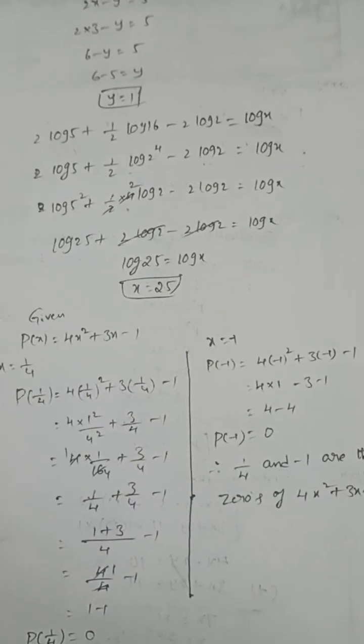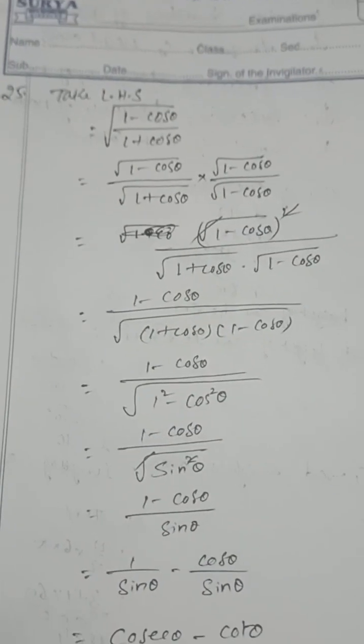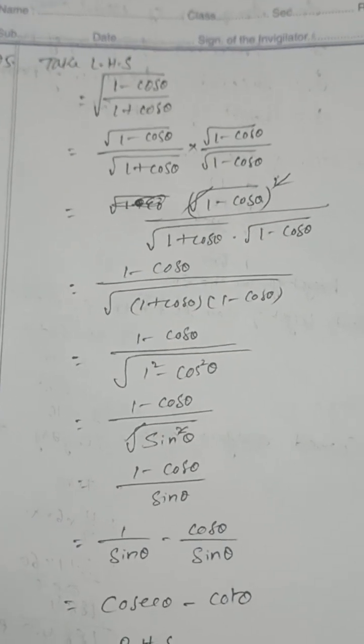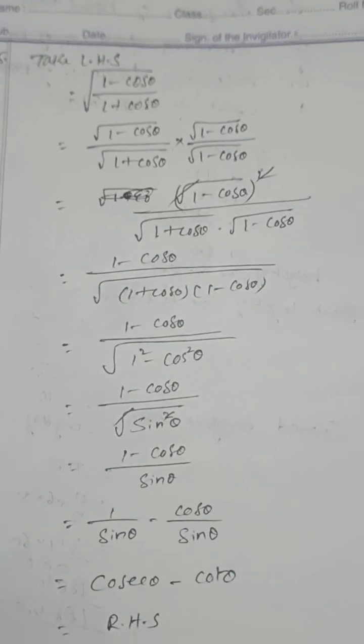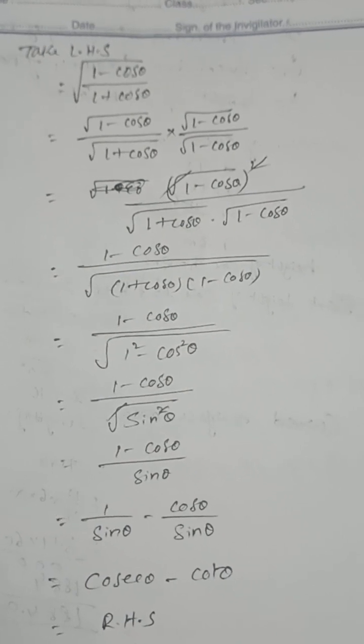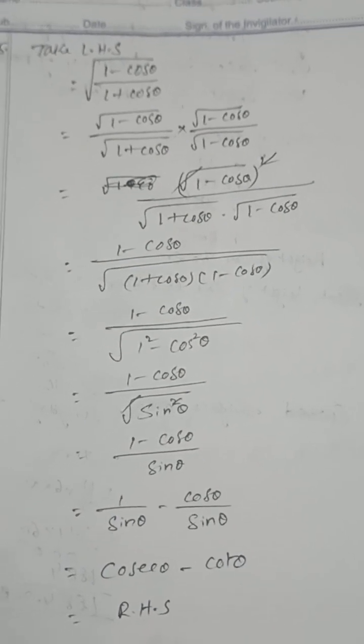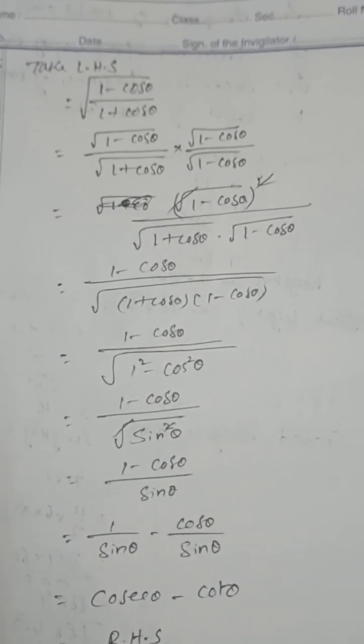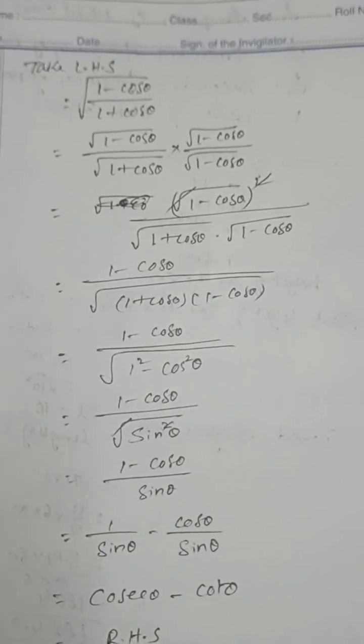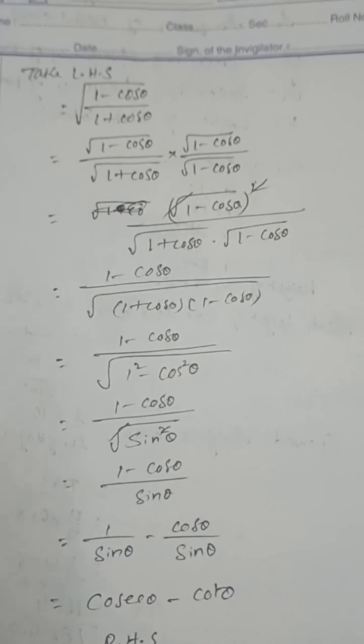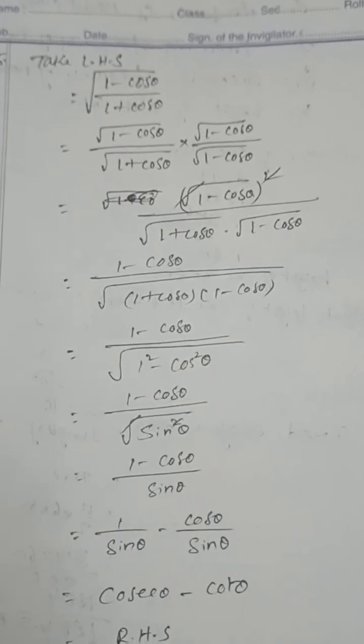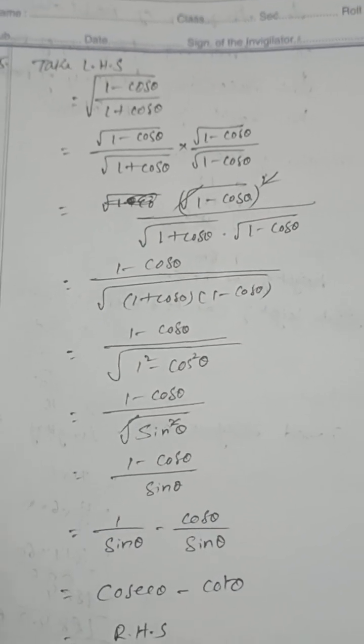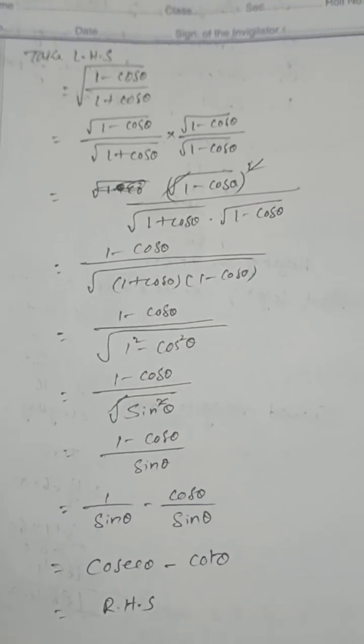√((1 - cos θ)/(1 + cos θ)). Here, square root of (1 - cos θ)² divided by (1 + cos θ)(1 - cos θ) = (1 - cos θ)/sin θ. 1/sin θ is cosec θ, cos θ/sin θ is cot θ. Therefore, cosec θ - cot θ.